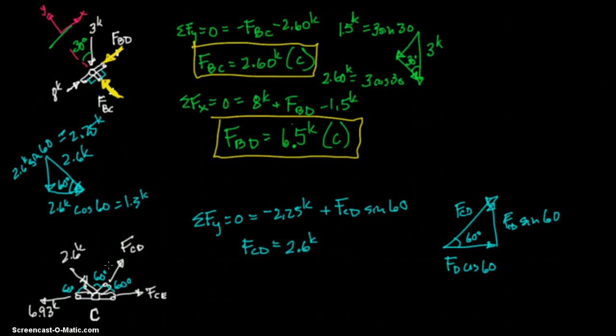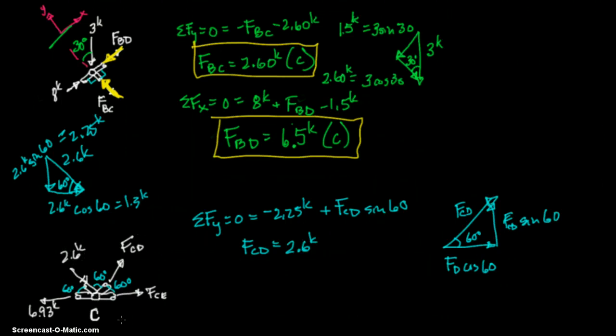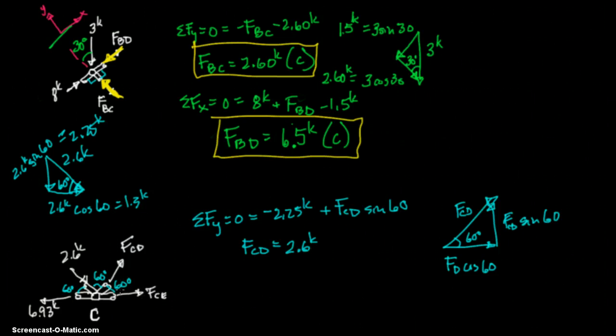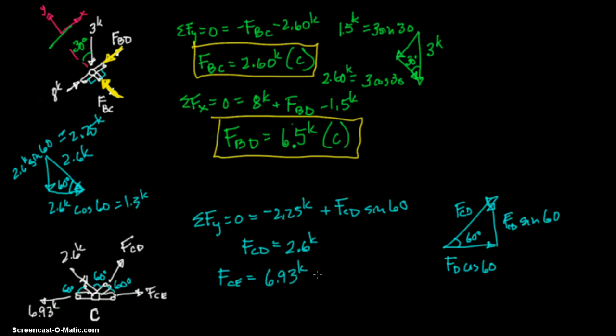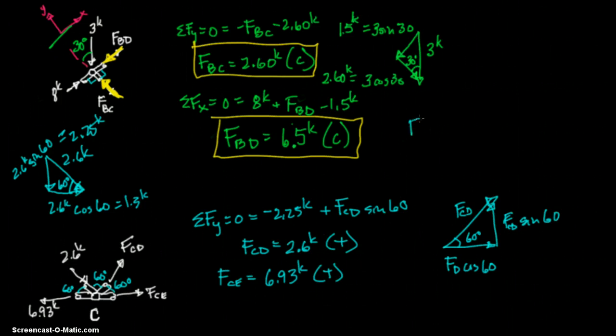And then, since that equals that, this will equal that. I hope that makes sense to you. That FCE equals 6.93 kips. And it should be in tension. And FCD is tension as well, since it's going out. But let's go ahead and solve for FCE.